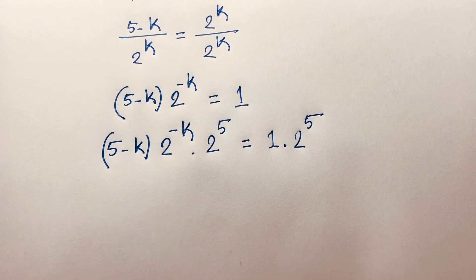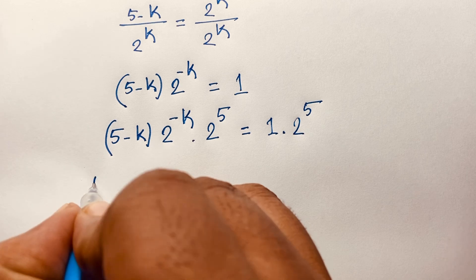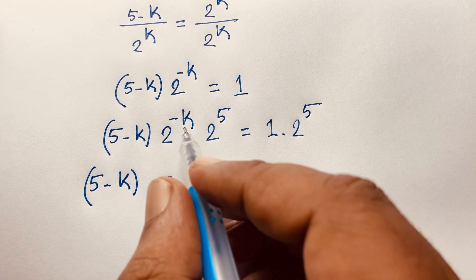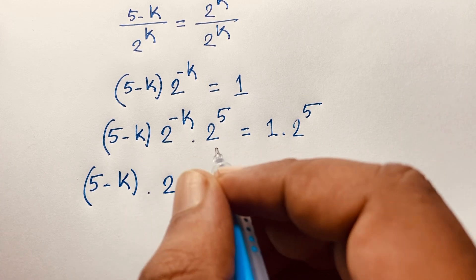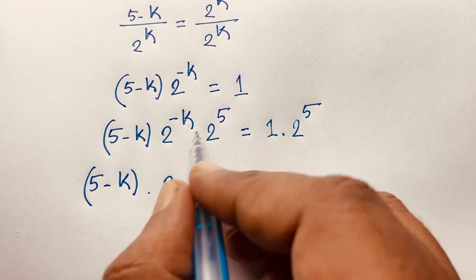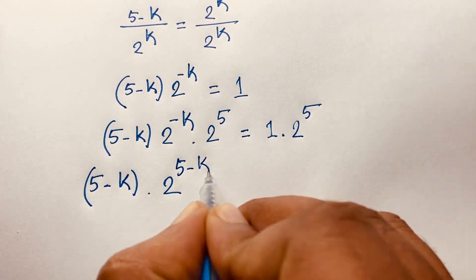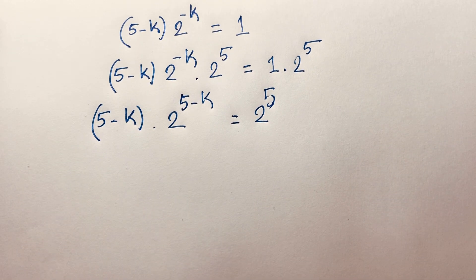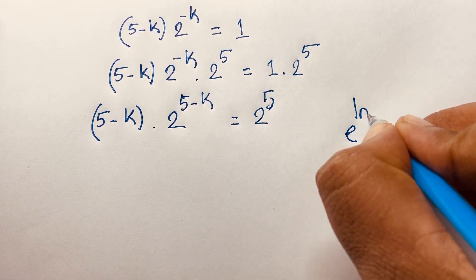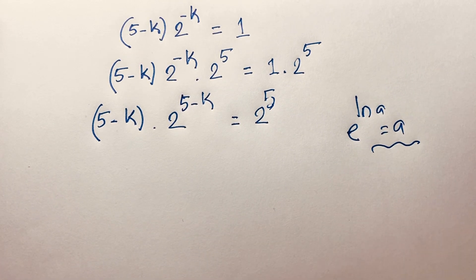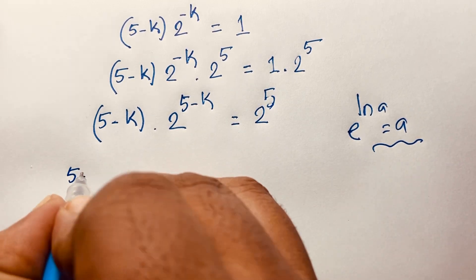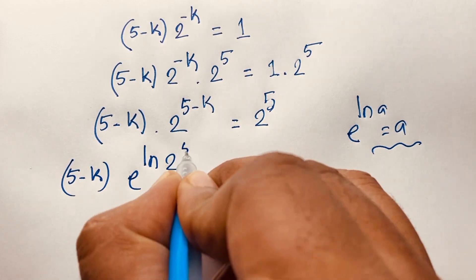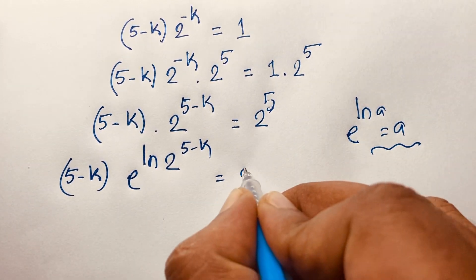Now we have (5 minus k) times 2 to the power (minus k plus 5). Using the law a^n times a^m equals a^(n+m), this simplifies to (5 minus k) times 2 to the power (5 minus k) equals 2 to the power 5. Now using the identity e to the power ln(a) equals a, I rewrite: (5 minus k) times e to the power ln(2 to the power (5 minus k)) equals 2 to the power 5.